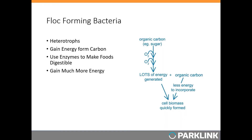Looking at the energy pathways, nitrifiers are oxidizing nitrogen but not getting a lot of energy from it, and they still have to go through essentially the same process as heterotrophs to build new cellular biomass. In contrast, heterotrophic bacteria get a lot of energy out of their process in fewer steps, so they are able to build populations much more quickly. Heterotrophs also require some nitrogen, which they mostly take in as ammonia or free amino acids.